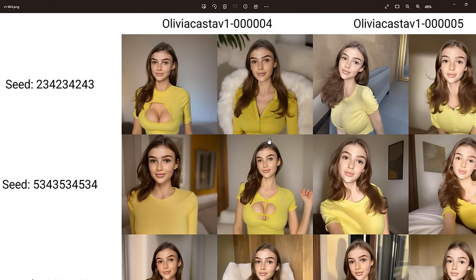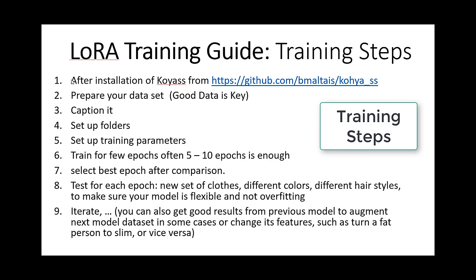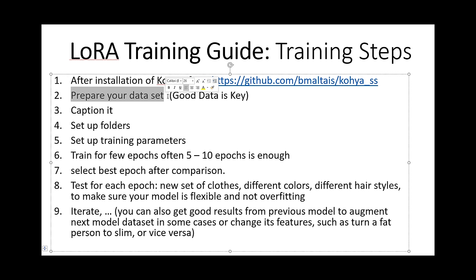We will see the difference between using 21 images and 330 images for training and the kind of results produced. The dataset is the most important part of LoRA training. All the remaining settings are less important — the network dimension, the alpha value, the captioning — all of these things are less important. What matters most is having a good dataset.